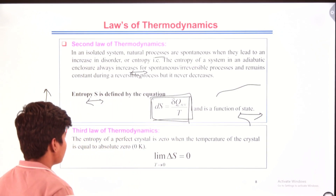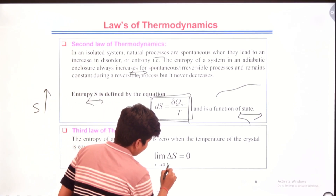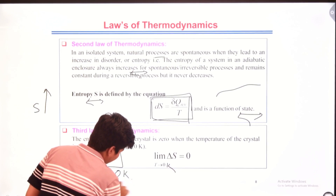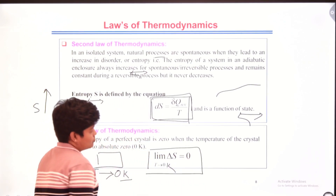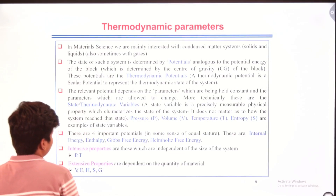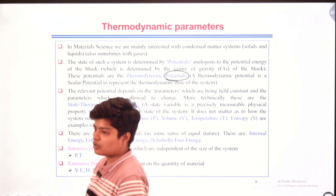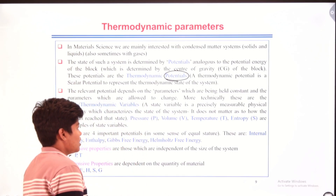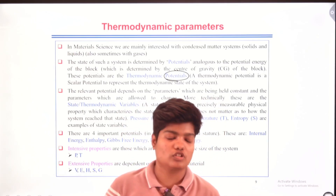The third law of thermodynamics states that the entropy of a perfect crystal is zero when the temperature of the crystal is at absolute zero Kelvin. That is, the limiting value of ΔS at T = 0 K is zero. Now, thermodynamic potential is a scalar potential used to represent the thermodynamic state of a system. The parameters include internal energy, enthalpy, Gibbs free energy, and Helmholtz energy.